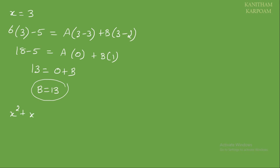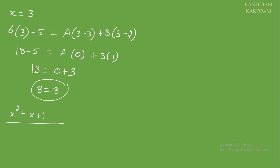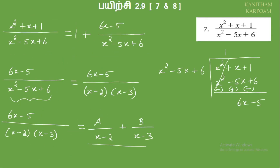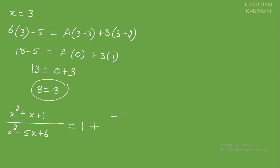So x squared plus x plus 1 by x squared minus 5x plus 6 equals 1 plus A by x minus 3 plus B, where B is 13 by x minus 2.